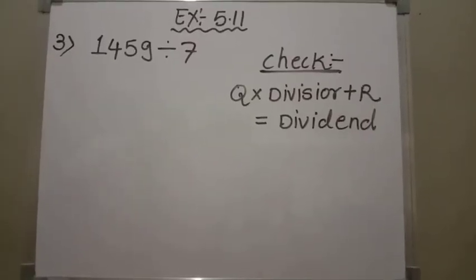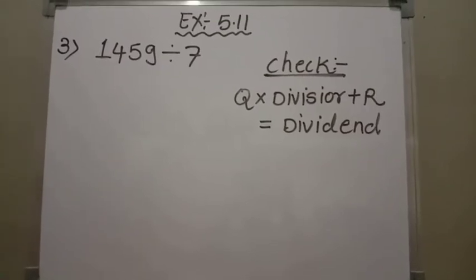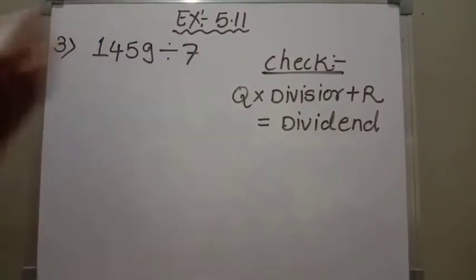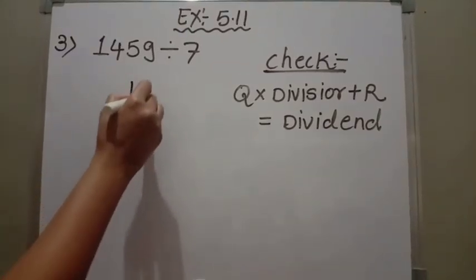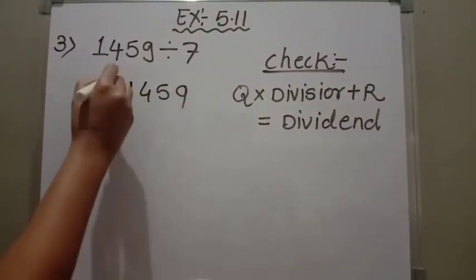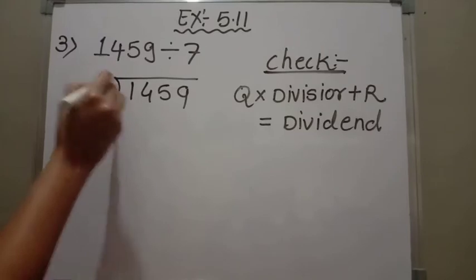Students, now we see the third problem. Here we have to divide the 4-digit number 1459 by 7. So let's see how to divide 1459 by 7 by the long division method.